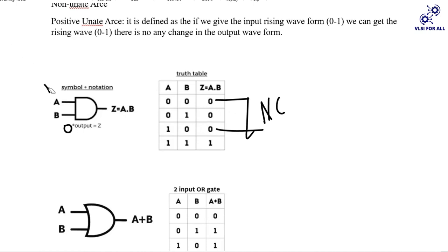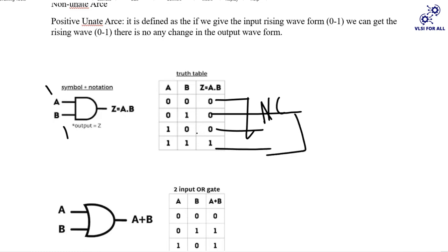Now make B constant at 1. B is 1, A starts at 0: inputs 0, 1, output is 0. Then A changes to 1 — here there is a rising edge. If we give input 0 to 1, we get the same rising edge only. So that is positive unate.